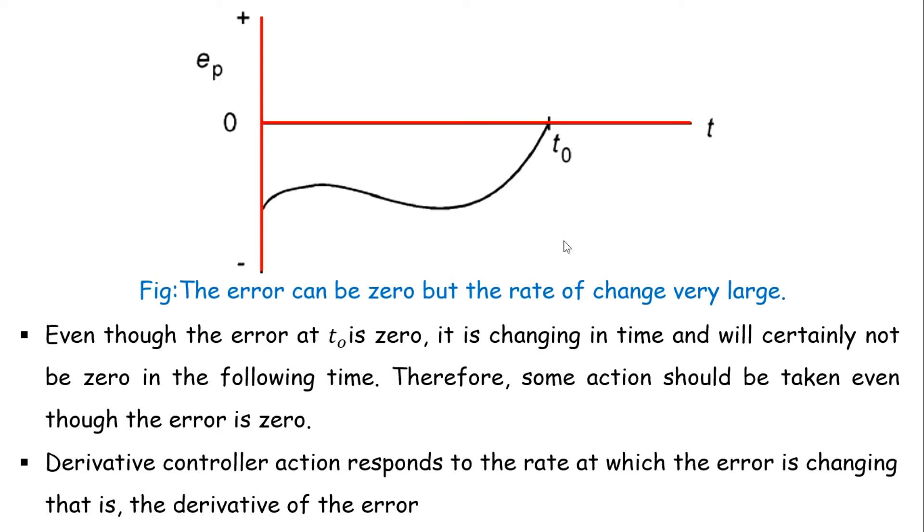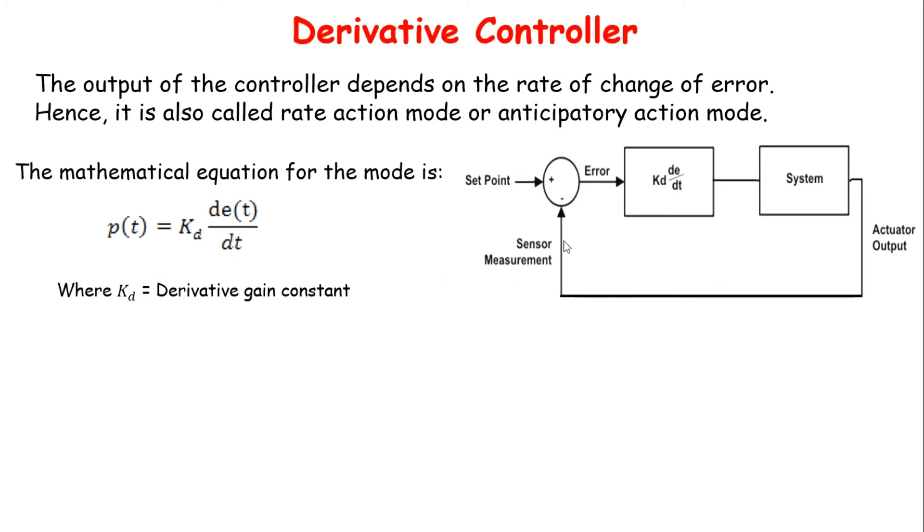In this mode the output of controller depends on the rate of change of error. Hence it is also called as rate action mode or anticipatory action mode. The mathematical equation for the mode is p(t) equals kd times de/dt.